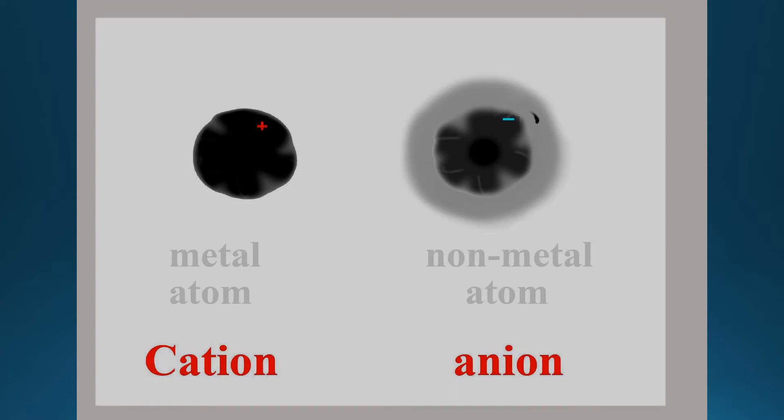It becomes a cation. They don't call it an atom anymore, because the charge is not balanced. Now they call it a cation — a positive ion. For the non-metal, they don't call it a non-metal atom anymore; they call it a negative ion — an anion.